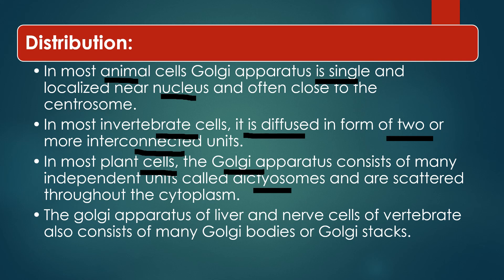In vertebrate animals, some cells — especially liver and nerve cells — may consist of many Golgi bodies or Golgi stacks. So in summary: animal cells generally have one Golgi apparatus, invertebrates may have two or more, plant cells have many smaller Golgi units called dictyosomes, and vertebrate liver and nerve cells may have many Golgi stacks.